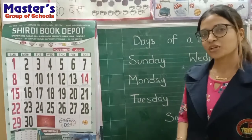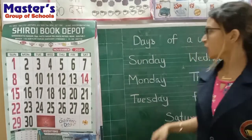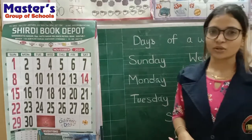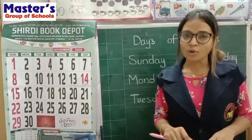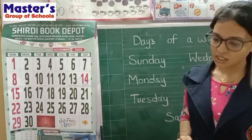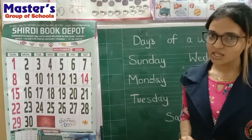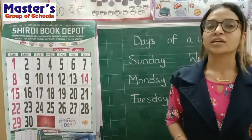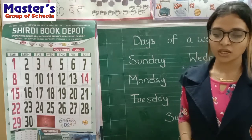Hello children, today we are going to learn days of a week. Days of a week. How many days are we having in a week? There are 7 days in a week.